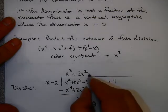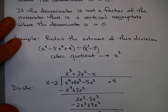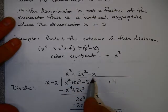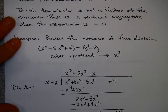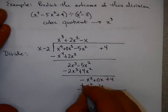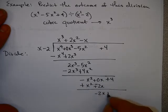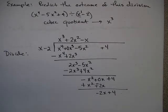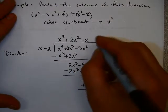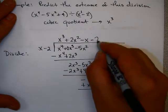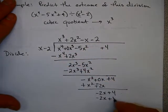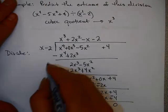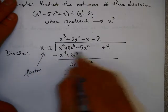How many times does x go into minus x squared? That would be minus x. That gives you minus x squared. Minus x times x is minus x squared. Minus x times minus 2 is plus 2x. And once again, I'm going to put a 0 in there. And let's subtract by changing the signs and adding. So how many times does negative 2 go into negative 2x? I have x minus 2 go into negative 2x. That would be negative 2 times.